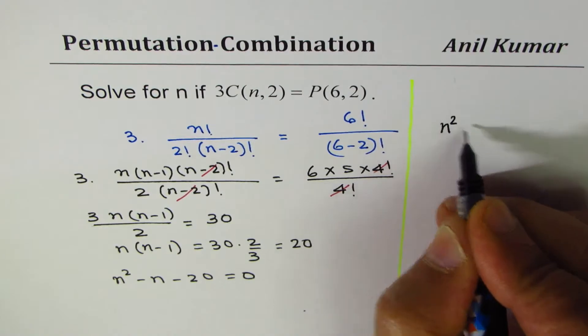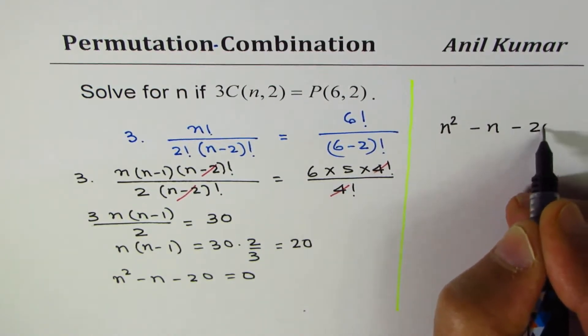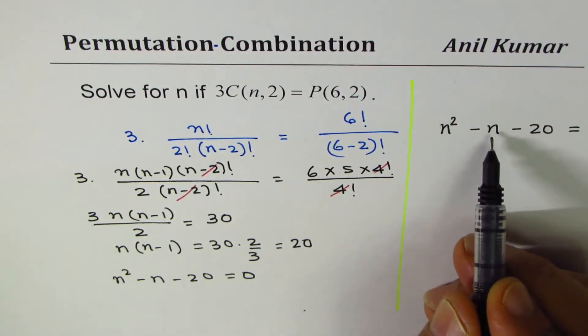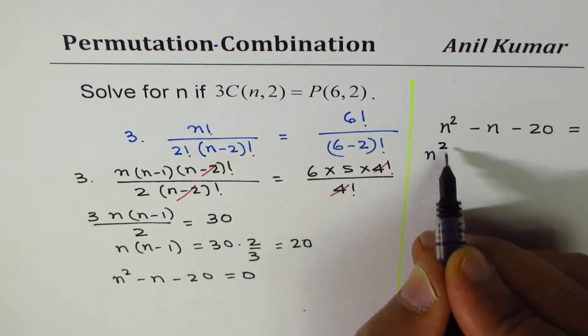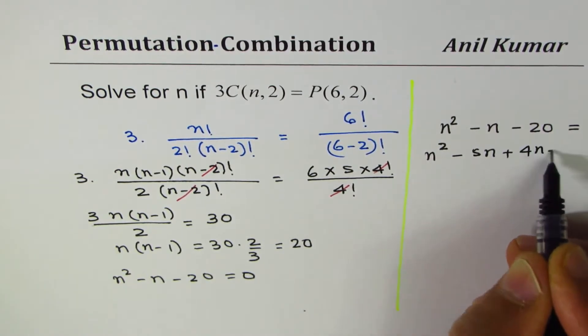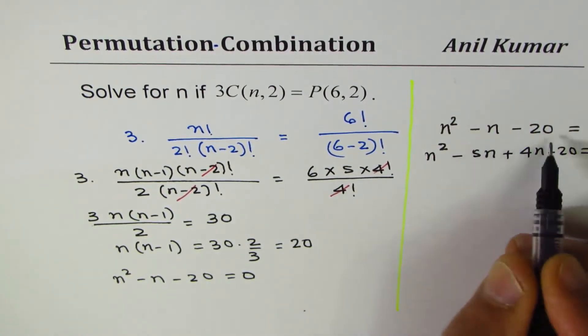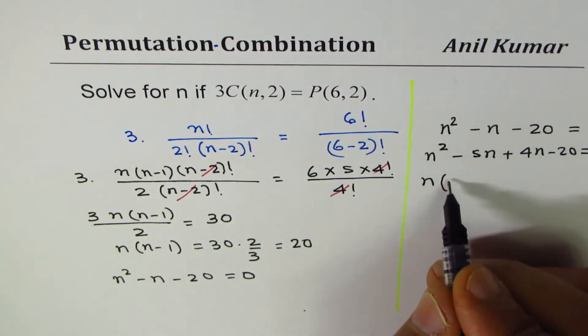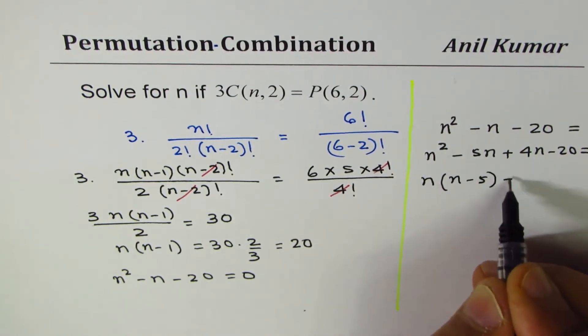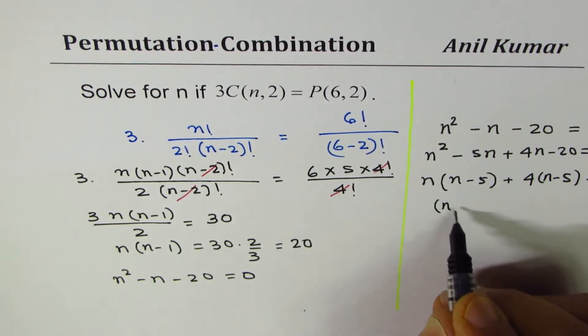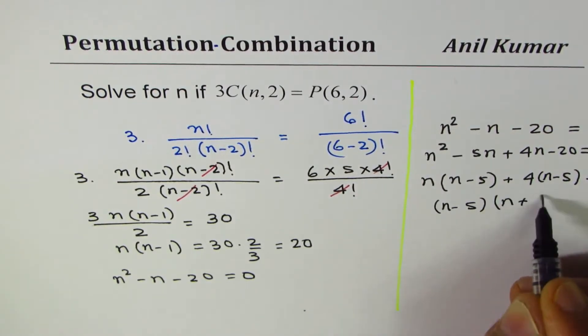The quadratic equation is n² - n - 20 = 0. We could write n² - n as -5n + 4n, so it could be written as n² - 5n + 4n - 20 = 0. We did this to factor. You can factor out n(n-5) + 4(n-5) = 0, which gives (n-5)(n+4) = 0.